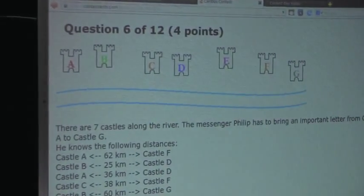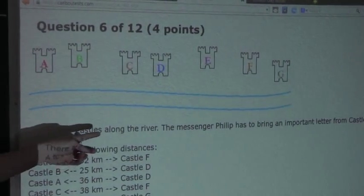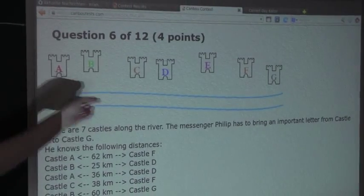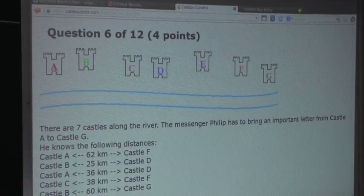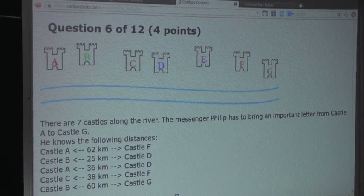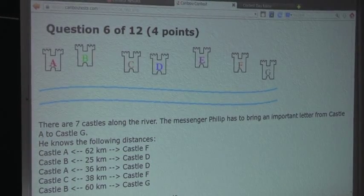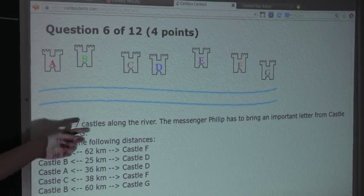So the question is, there are seven castles along the river, which are shown up here. The messenger, Philip, has to bring an important letter from Castle A to Castle G. Now, he knows the following distances.